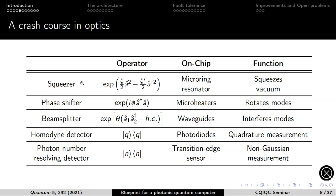The operations available in an optical setting include squeezers, which squeeze vacuum states into squeezed states — a photonic mode is a harmonic oscillator, so the operator can be expressed in terms of raising and lowering operators. On chip, squeezers can be implemented with microbeam resonators. Other linear optical components are phase shifters, implemented with micro heaters to rotate modes in phase space, and beam splitters, implemented using waveguides. For GKP qubits, beam splitters are useful for generating entanglement between qubits.